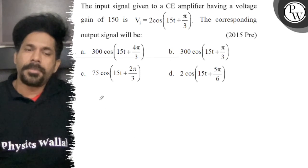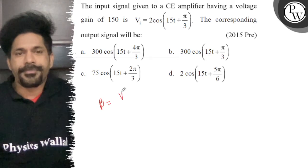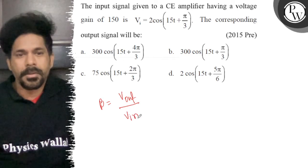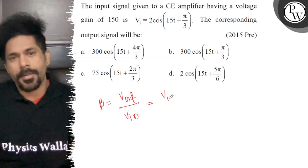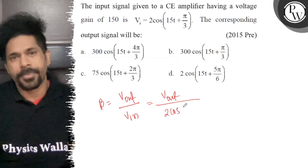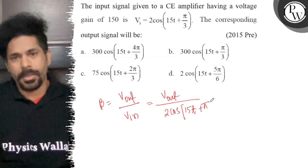So now we know that beta is equal to Vout upon Vin. So how to get Vout? The Vin is equal to 2 cos(15t + π/3).